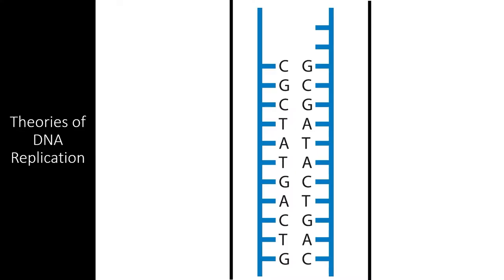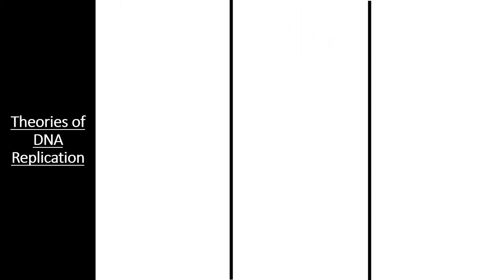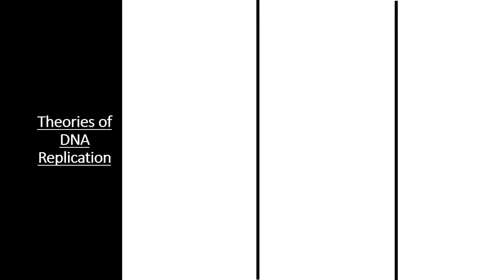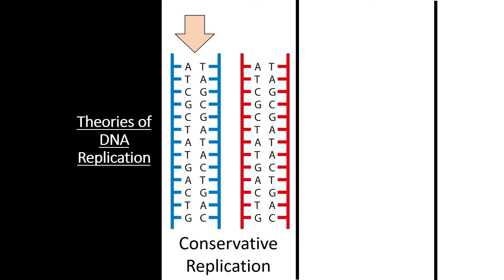Once the structure of DNA was fully understood, the process of DNA replication still had to be determined. Several theories were presented as to how DNA was replicated and passed into daughter cells after mitosis or binary fission. The first theory, conservative replication, would happen if both strands of the template DNA molecule stayed bonded and intact, while serving as a template for a brand new and identical double-stranded DNA molecule.